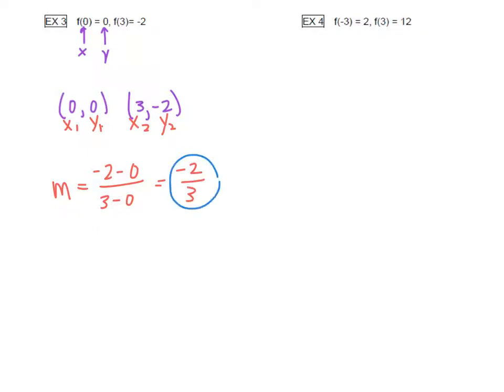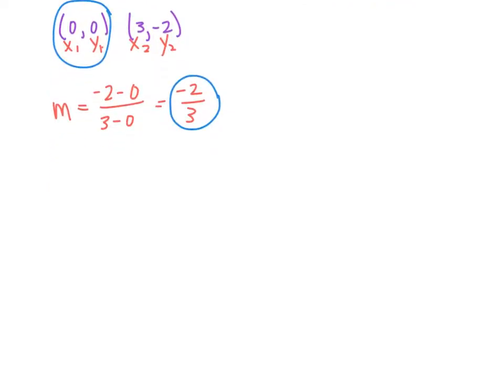So now we're going to pair our slope with one of our points. I always just pick the first one, and we go into point slope form. y minus 0 equals -2/3 times x minus 0. So y minus 0 equals, let's distribute that slope. We have -2/3 x, and -2/3 times 0 is just 0.